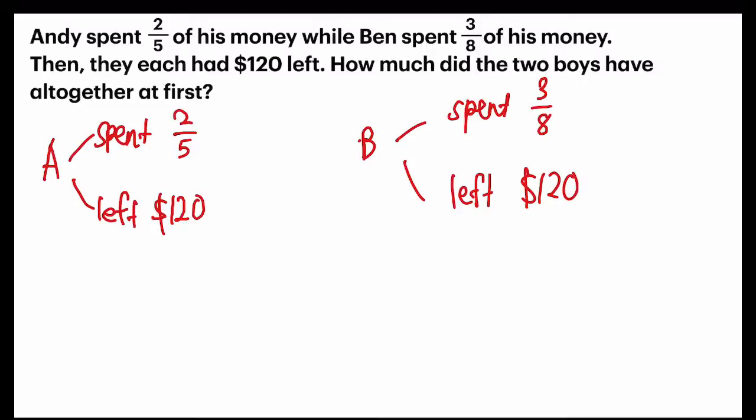We are finding the amount of money at first. To do so, I need to find out both for Andy and Ben the total sum of money that they have spent and left. How do I do so?